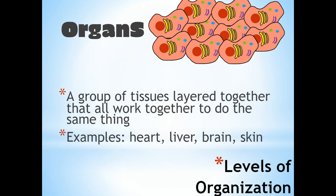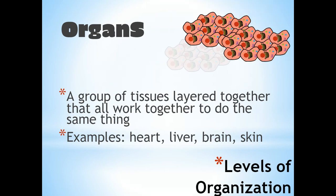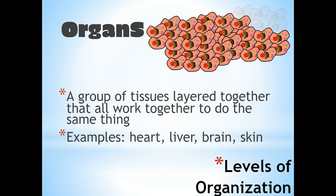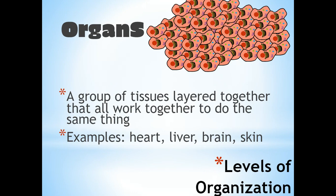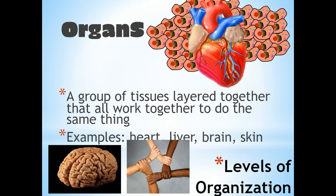Those tissues come together — groups of tissues layered together. They work together for the same thing and they create organs. So we have lots of different tissues coming together creating an organ. Some examples of organs would be a heart, a liver, a brain, or even your skin.